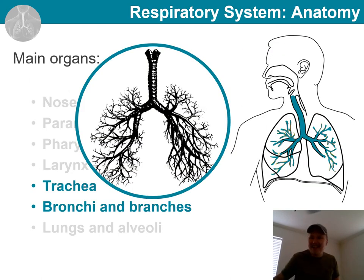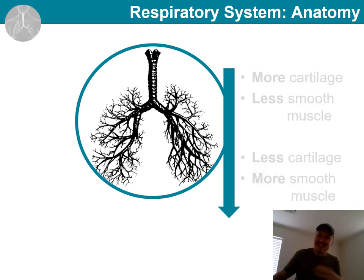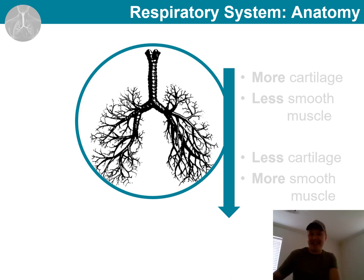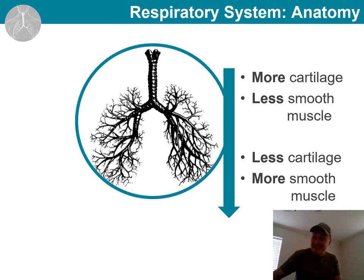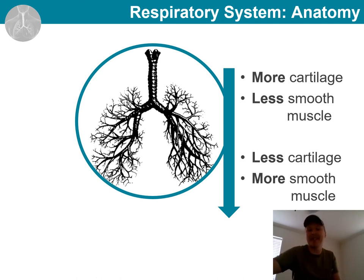Let's notice that our bronchial tree and its wall structure changes throughout its length. As we move further down the respiratory tree, the wall structure changes. Higher up, there is more cartilage, and as we move further down, the amount of cartilage decreases and the amount of smooth muscle increases.